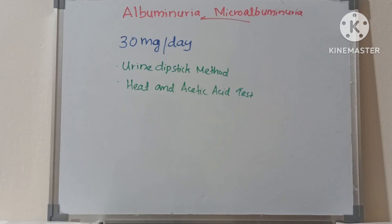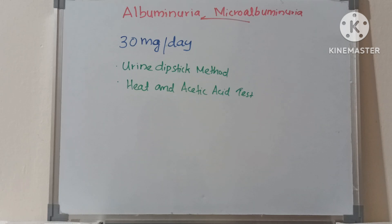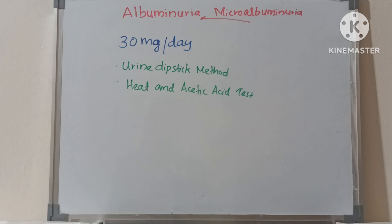Normally, 30 mg per day of albumin is excreted in urine, which cannot be detected by usual tests. Albuminuria can be detected by the urine dipstick method or by the heat and acetic acid test.